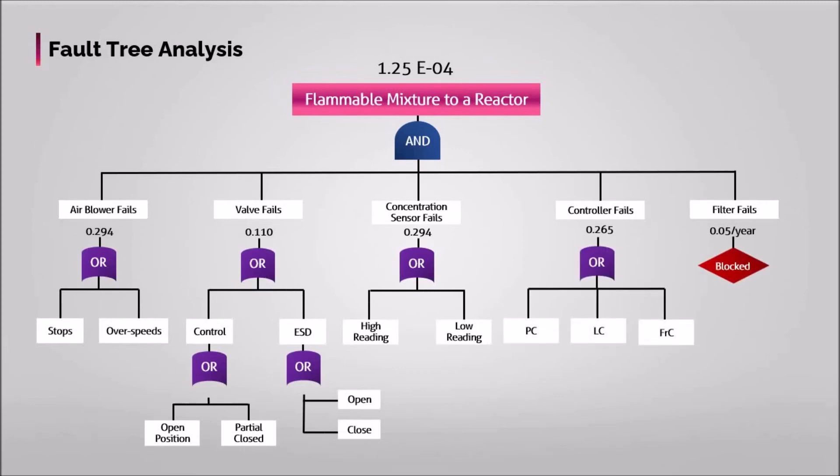Now, let's calculate the probability for controller fail. That equals to the sum of probabilities for pressure, level, and flow ratio controllers. Then, using this, we can find out the probabilities of each contributor to fail in controller.